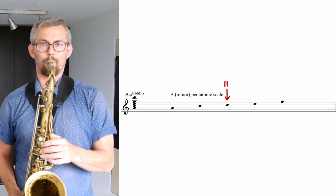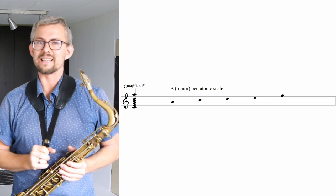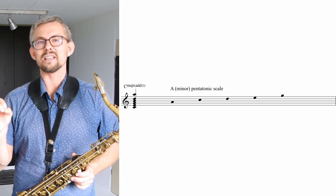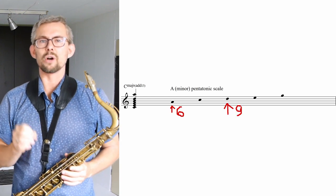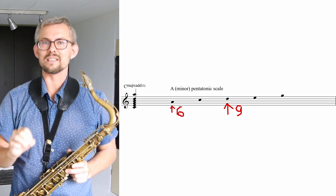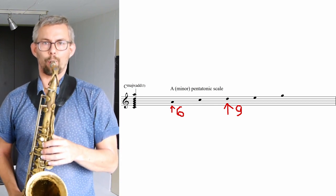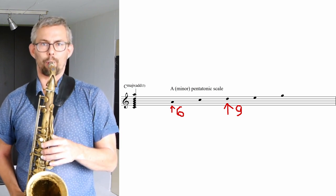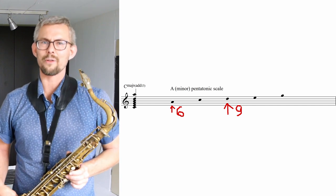Another chord you can look at is the C major chord, which also fits the A minor pentatonic scale. You have A, C, D, E, and G. Looking at the C major chord, you have C, E, and G. The two added notes — D and A — are the 6th and the 9th of the C major chord. So we get a C major 6-9 chord, and if I rearrange this, it sounds really great too.